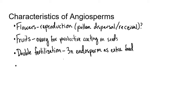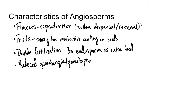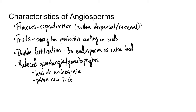We also get further reduction of the gametangia, or reduced gametophytes. In this, we have a loss of archegonia — we no longer have those. In the gymnosperms, we lost the antheridia; in the angiosperms, we lose archegonia. And the pollen is now two-celled, so there are no more prothallial cells — those were vestigial anyway.